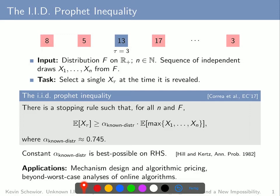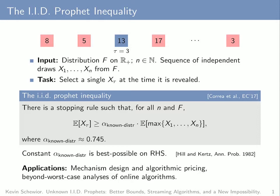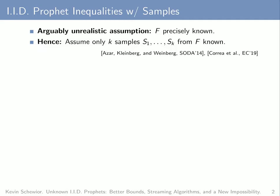Let me also say a few words about applications that have caused quite some interest in profit inequalities in the past few years. One application is in mechanism design and algorithmic pricing, because one may imagine these draws as valuations of customers for a certain product. The second application is in beyond-the-worst-case analysis of online algorithms, because one may interpret this as beyond-the-worst-case analysis of an online version of the simple problem of selecting the maximum of a sequence.